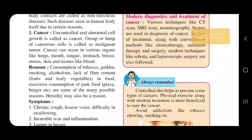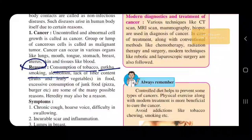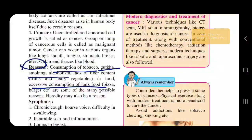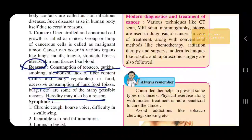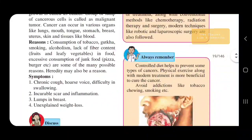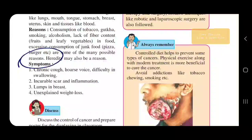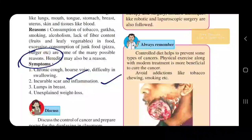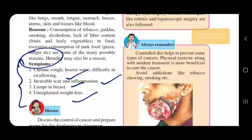Reasons for cancer include consumption of tobacco, smoking, alcohol, lack of fiber content, fruits and vegetables in your food, excessive consumption of junk food like pizza and burgers, and heredity — transfer from one generation to another. Symptoms include chronic cough, hoarse voice, difficulty in swallowing, incurable sores, inflammation, a lump in the breast, and unexplained weight loss.